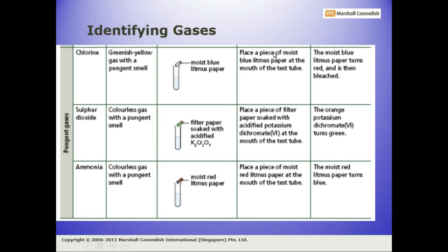By placing a piece of moist blue litmus paper at the mouth of the test tube from where the gas is liberating. The moist blue litmus paper, if it turns red and then bleaches, it means the gas is chlorine. Bleach means removal of color. So here is the test and the observation.